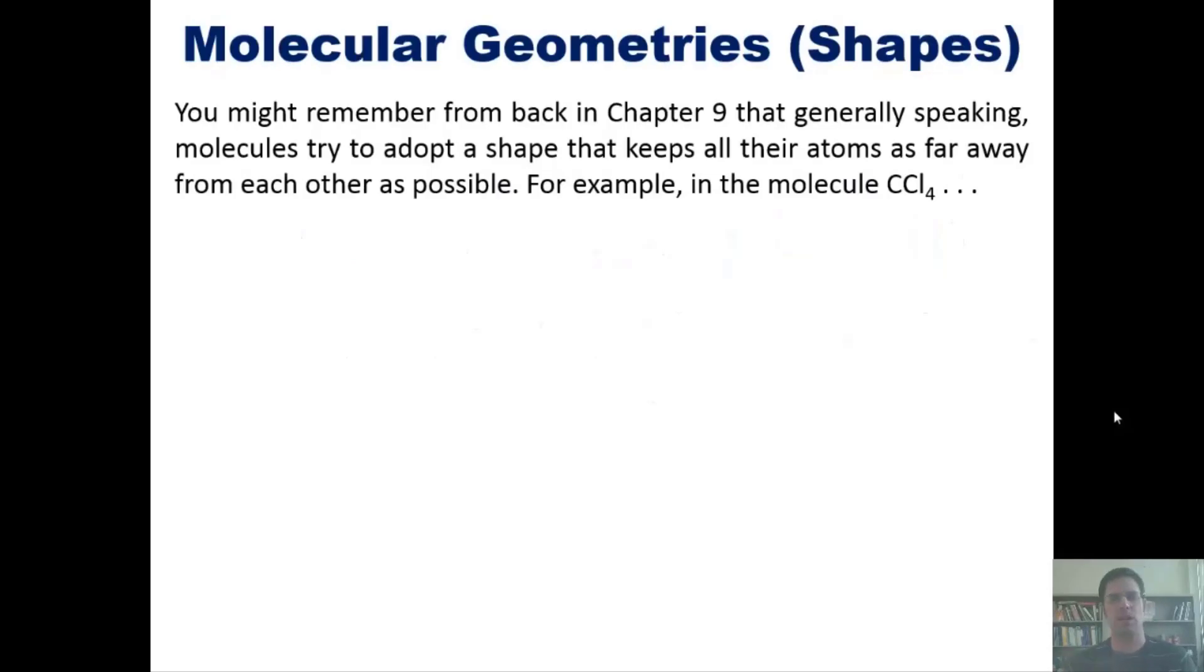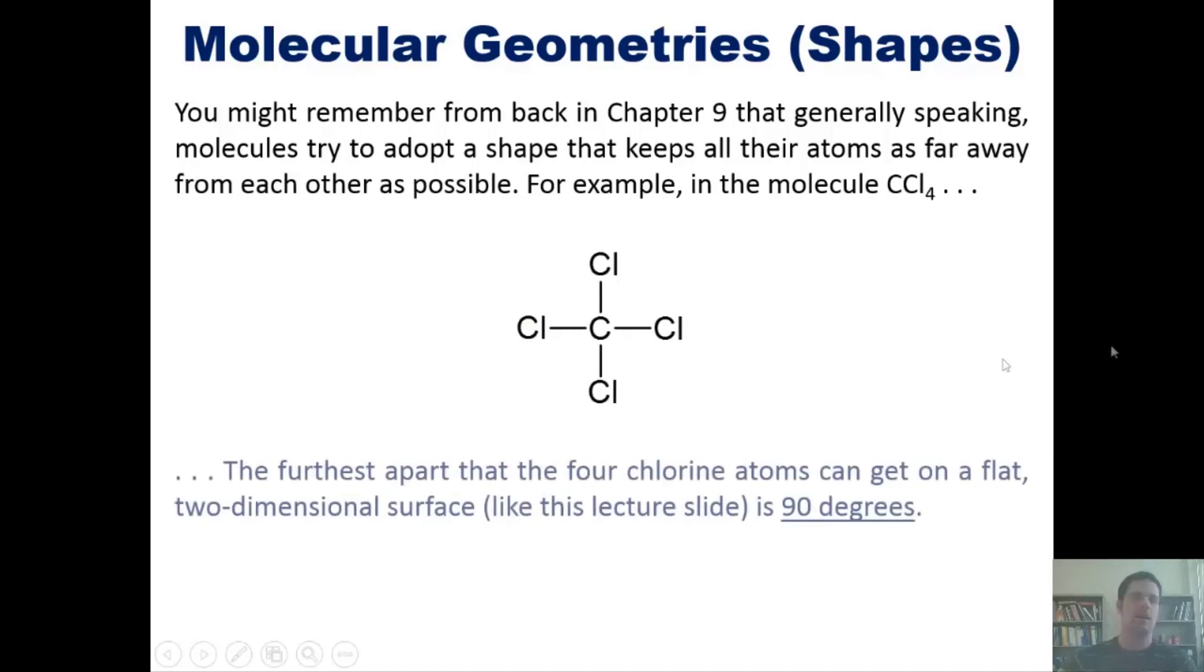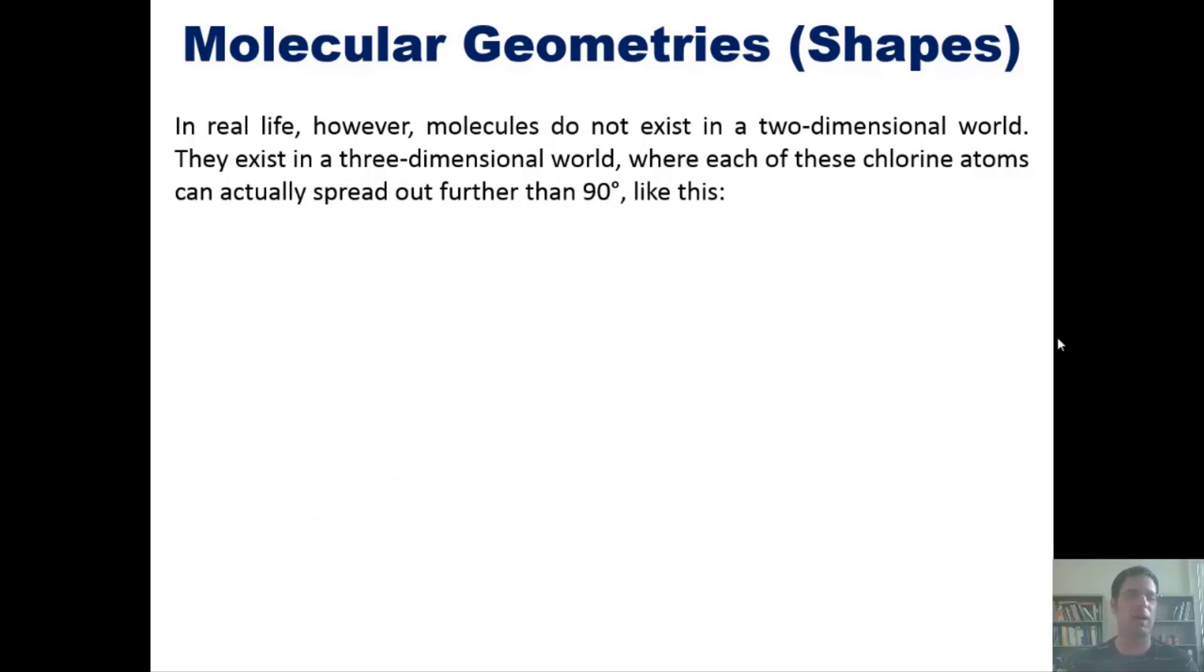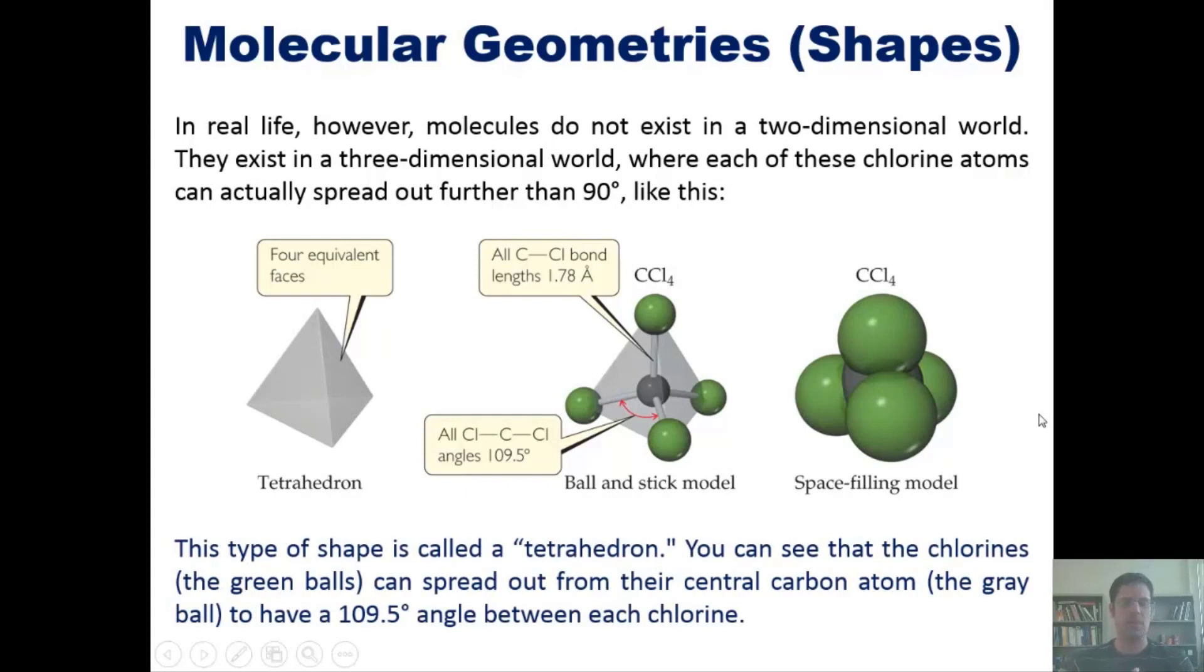Back in chapter 9, you might remember that molecules try to adopt a shape that keeps all atoms around them as far away from each other as possible. For example, in CCl4 (carbon tetrachloride) shown here, the furthest apart that four chlorine atoms could get on a flat two-dimensional surface is 90 degrees. In real life, however, these molecules exist in a three-dimensional world, so these chlorine atoms can spread out further to 109.5 degrees. This shape is called a tetrahedron.